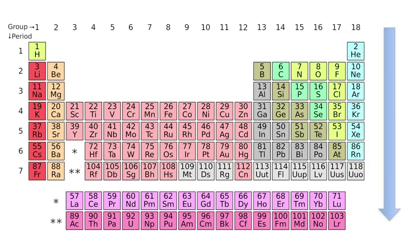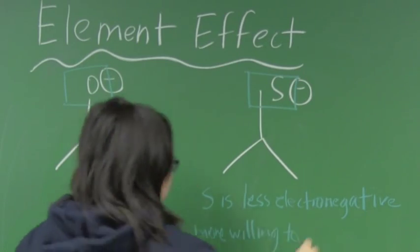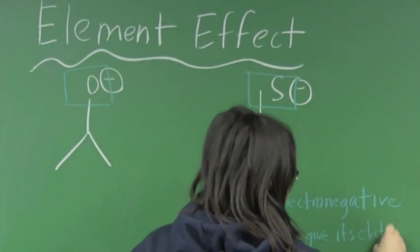If we go from top to bottom, the size of our atom increases, which is why we observe the increase in acidity. In this example, we can simply conclude that the negative charge on sulfur is more stable just by looking at the periodic table.